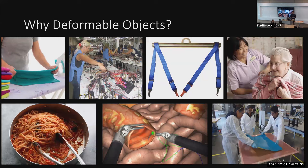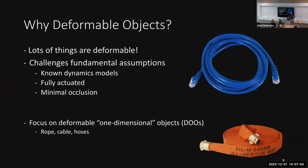Why focus on deformable objects? They are everywhere, with lots of important applications where the robot might have to interact with one. You might need to fold laundry, install a cable harness, cook food, do surgery, take care of people, or manufacture things like carbon fiber. Deformable objects also challenge fundamental assumptions in model-based planning for rigid objects: known dynamics models, full actuation, and minimal occlusion.